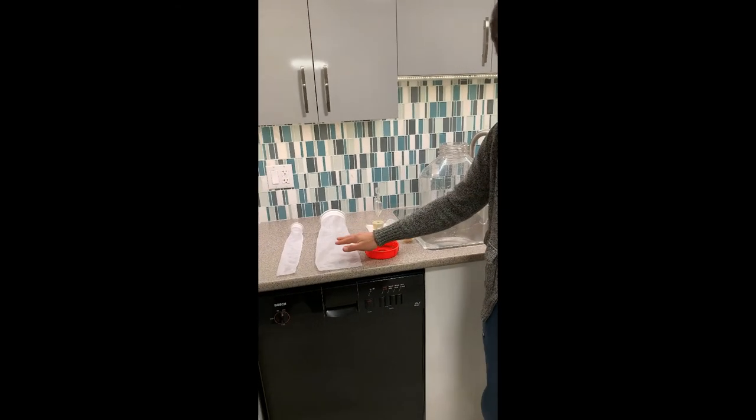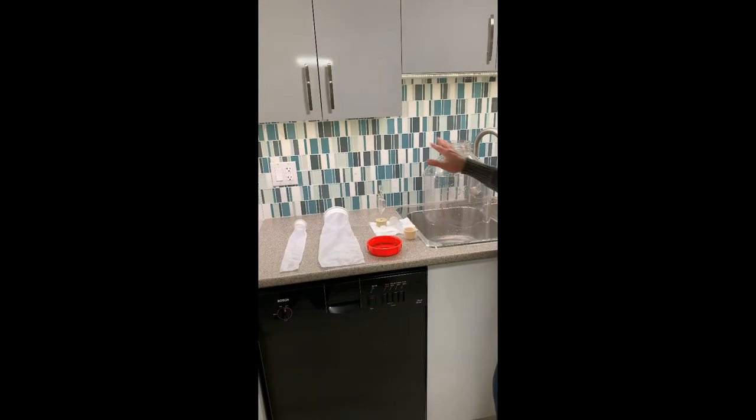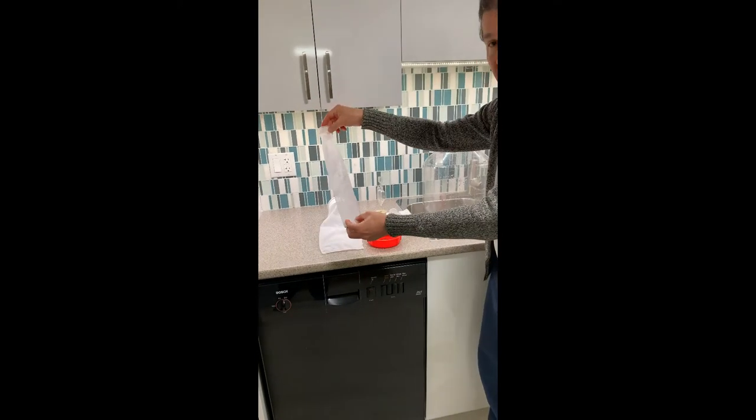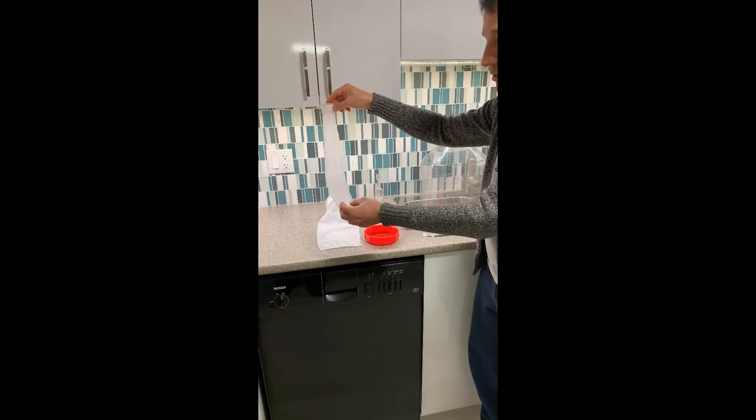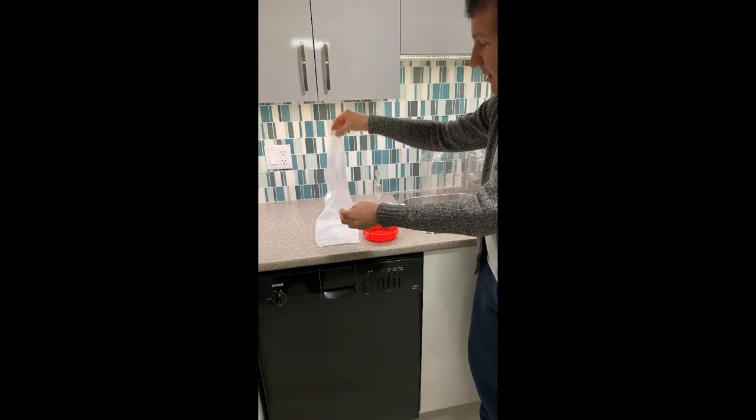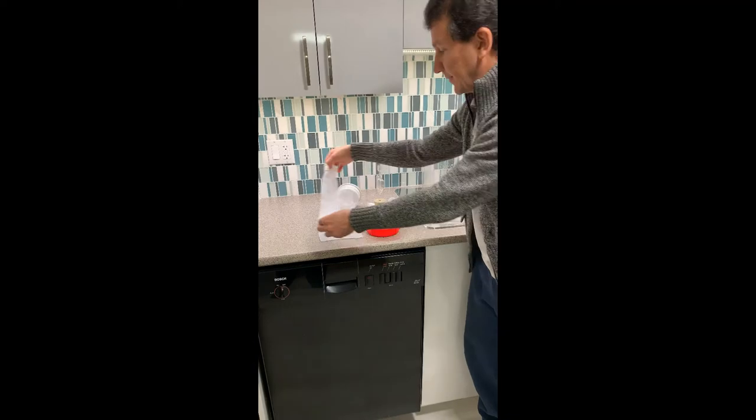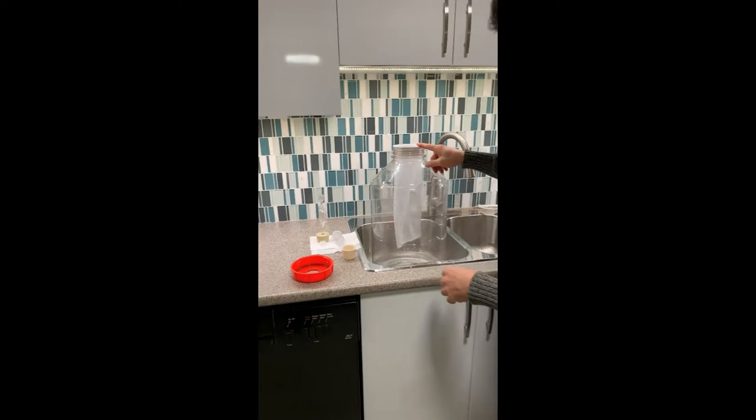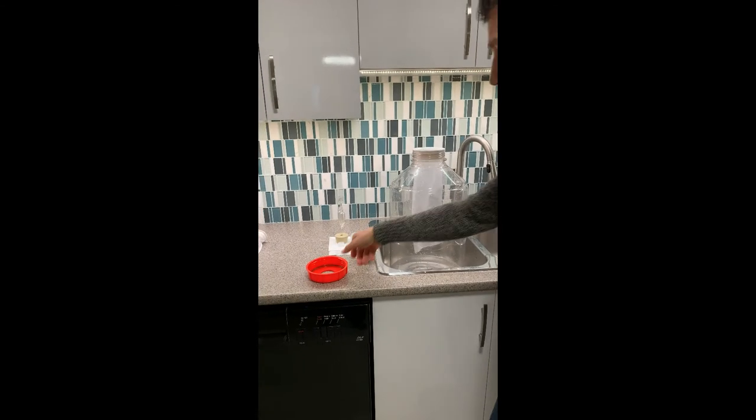Now I'm going to do a quick demonstration on testing the seal of the FermMonster with the monster strainer and the mini monster strainer. This one can be used on the PET carboy, and both can be used on the FermMonster. We're doing the water test to make sure it's properly sealed.